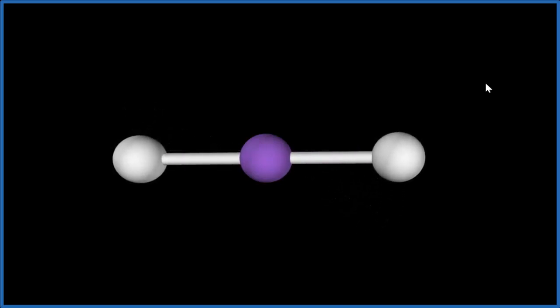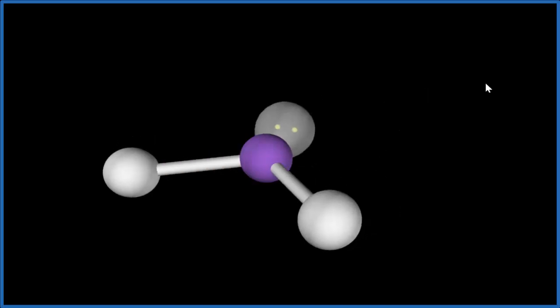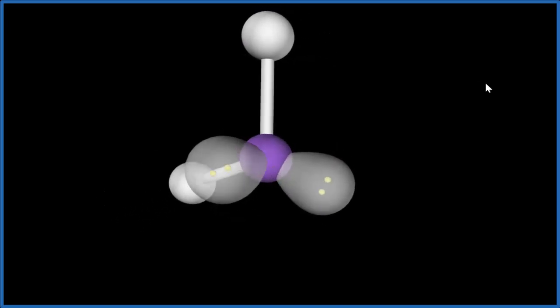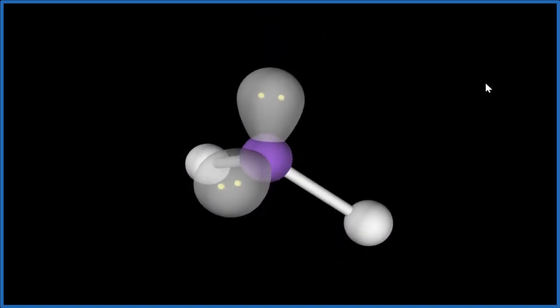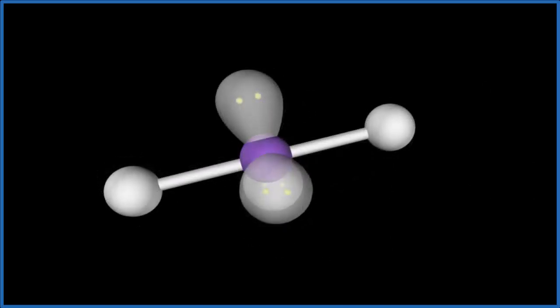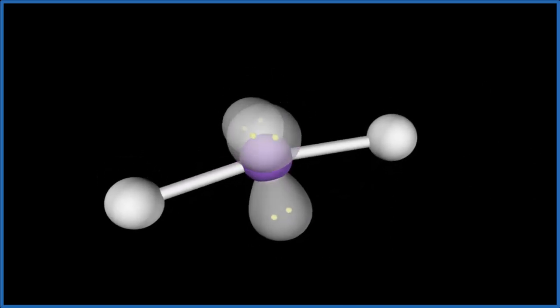But then we have those three lone pairs. So let's add them. If we add one, it forces things down. Add another, even further. But if we add that third lone pair, watch what happens. It forces it into this linear molecular geometry.